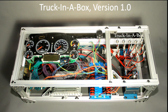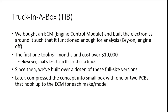The solution: the truck in a box. This is a bunch of components out of a heavy truck — the engine control module, the instrument cluster, a power distribution unit, and a National Instruments CRIO (we quit using that). The knobs are potentiometers for sensors. The first one took about six months to build and cost about ten thousand dollars — thanks DARPA — but that's still a lot cheaper than a truck. Since then we've built over a dozen of those full-size ones for different trucks and engines. We later compressed the concept to the size of a circuit board, but it's not pretty so we're not going to show it off.